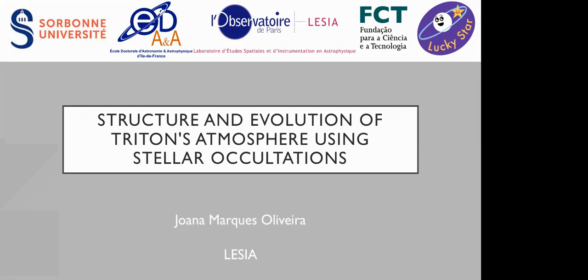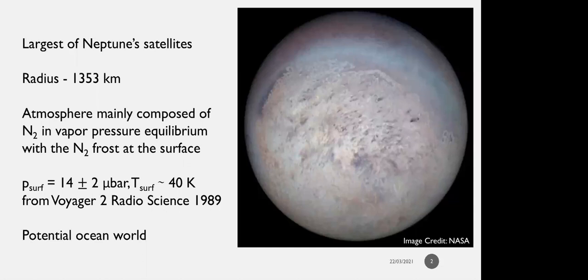I'll be talking about Triton's atmosphere using stellar occultations since 1989, when Voyager did its flyby. Triton is the largest of Neptune's satellites with a radius of 1,353 kilometers. It's the only satellite in the solar system besides Titan to possess a significant atmosphere. Its atmosphere is mainly composed of molecular nitrogen in vapor pressure equilibrium with the nitrogen frost at the surface. Voyager provided a surface pressure of 14 microbars in 1989, consistent with a vapor pressure equilibrium at around 40 Kelvin. It is also a potential ocean world.